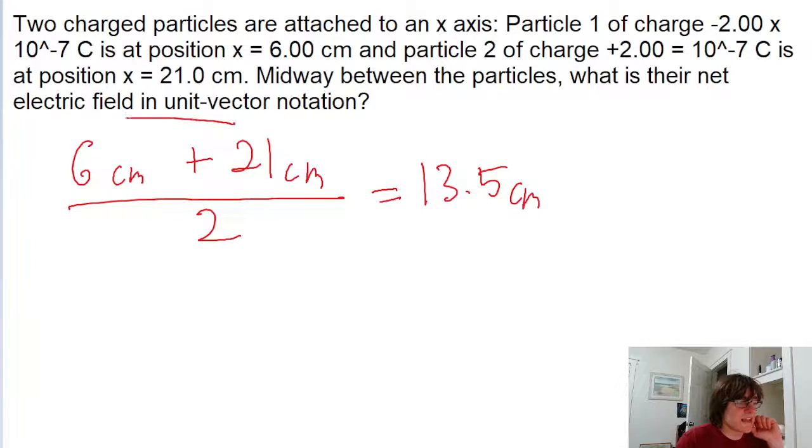The reason why this method works is because you can kind of think of it like you're taking an average of the particles. But since you're taking the average of only two values, that just gives you whatever is halfway between them. So x equals 13.5 centimeters is where the midpoint is.